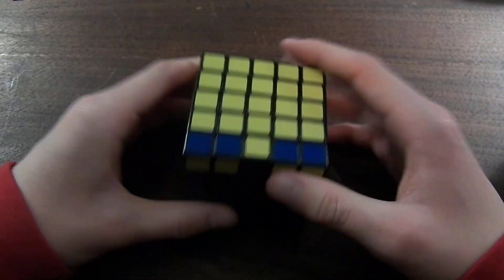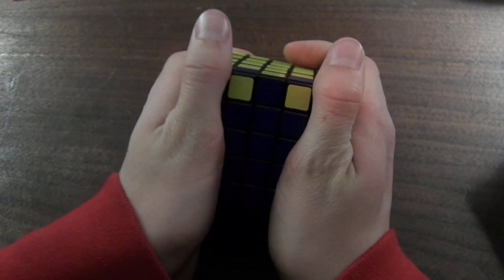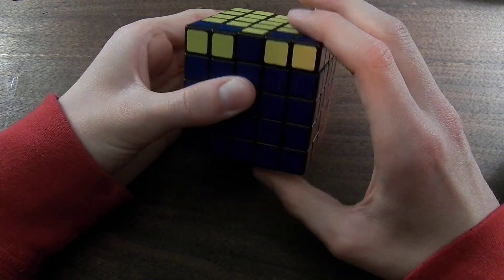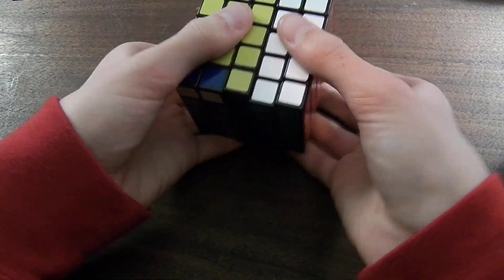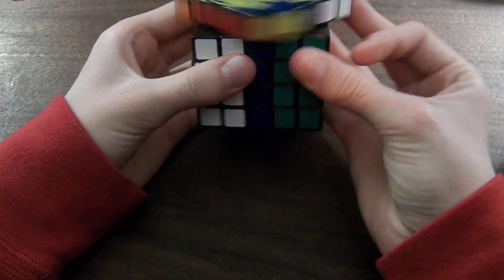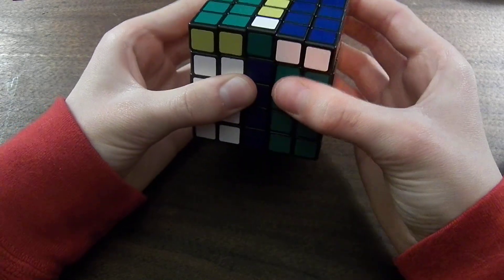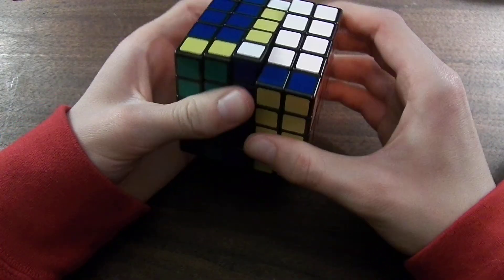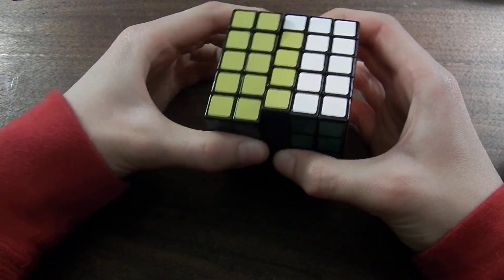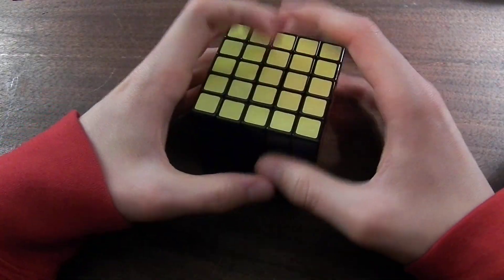Once you do that algorithm when this kind of case is found, it'll solve it. R2, B2, U2, left, U2, right inverted, U2, right, U2, F2, right, F2, left, U2, right 2. Once you do that, you're going to be able to solve the 5x5.